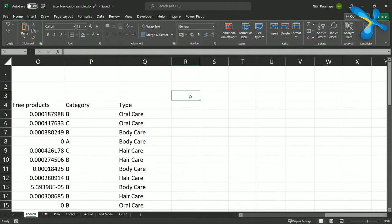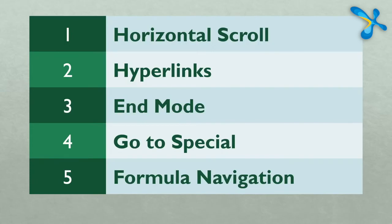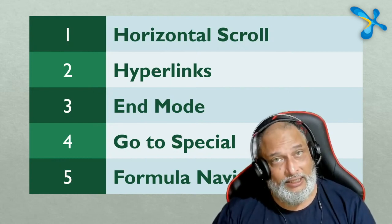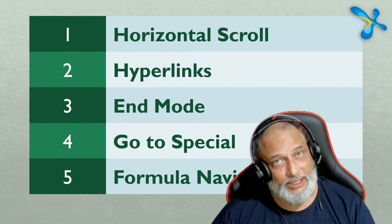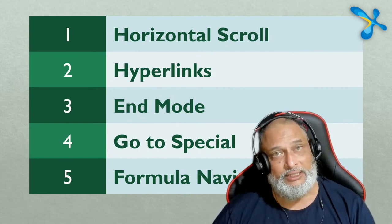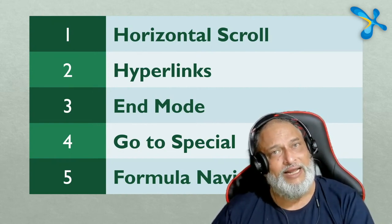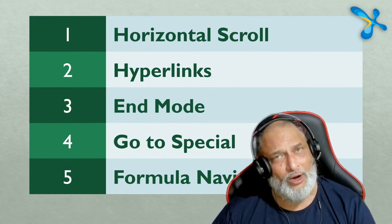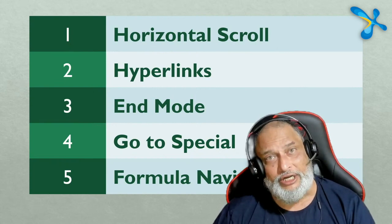Now let's look at hyperlinks. Generally we use hyperlinks in Word, email, or PowerPoint, but hyperlinks are also equally useful in Excel. Excel files can get very complex — we have multiple sheets, and in each sheet we have multiple blocks of data, pivot tables, charts, and so many different things. And when you are sending a big file to someone, whether as a link or an attachment, the recipient has no clue what is in the file.